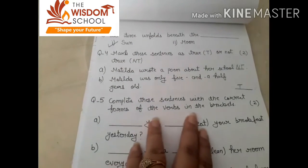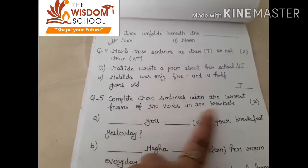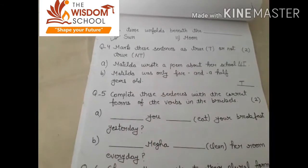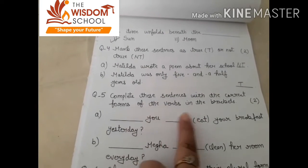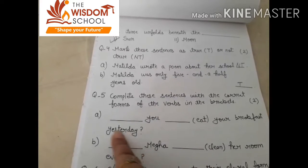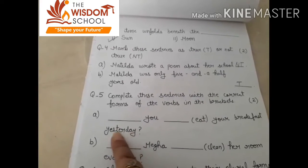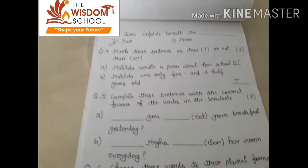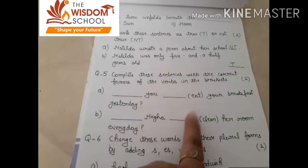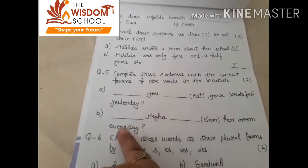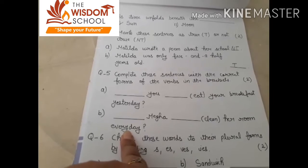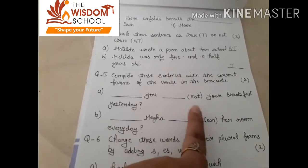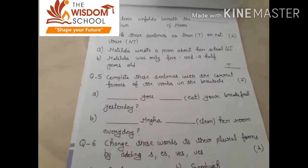Complete these sentences with the correct forms of the verbs in the bracket. Yaha pe aapko correct forms of verbs fill karni thi. Dash you dash your breakfast yesterday — yesterday shows the past, so: Did you eat? Dash mega dash her rooms everyday — everyday shows the present, so: Does Mega clean her room everyday?